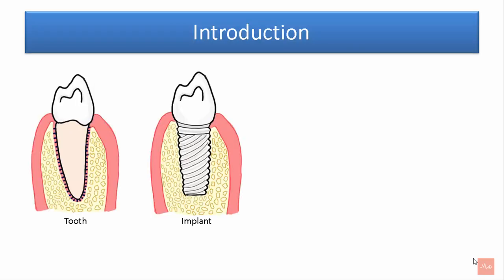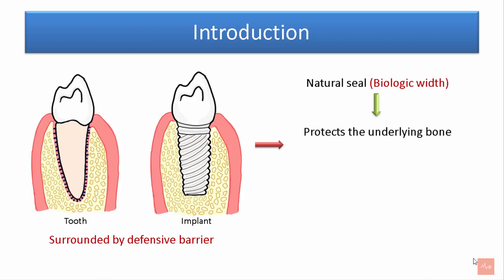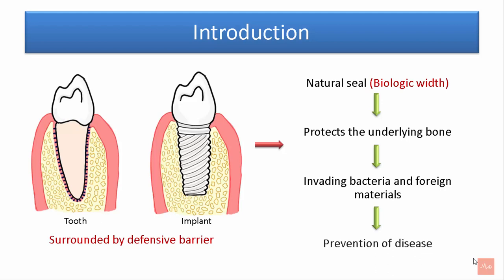In order to maintain healthy anatomic relations, the tooth and implant are surrounded by a defensive barrier, also called a natural seal or biological width. This biological width protects the underlying bone from invading bacteria and foreign materials, prevents the spread of disease, and maintains health.